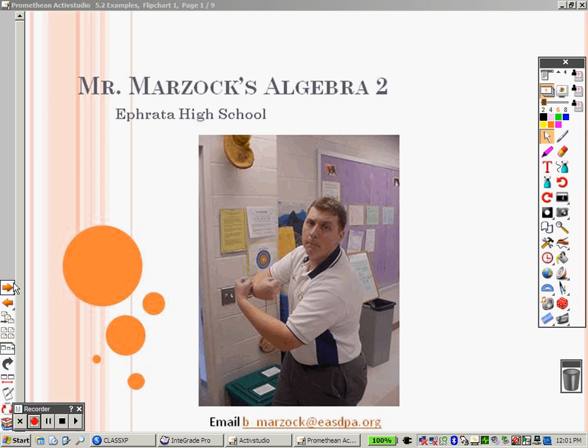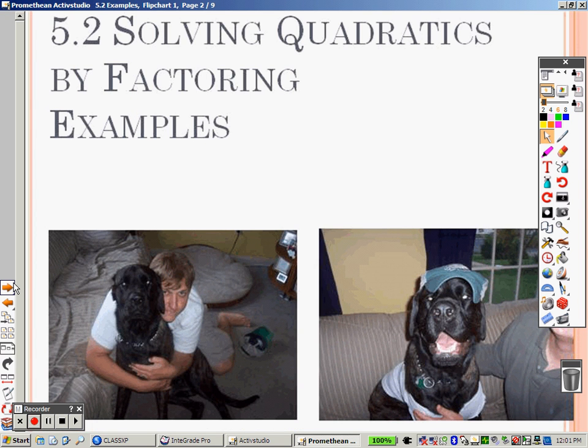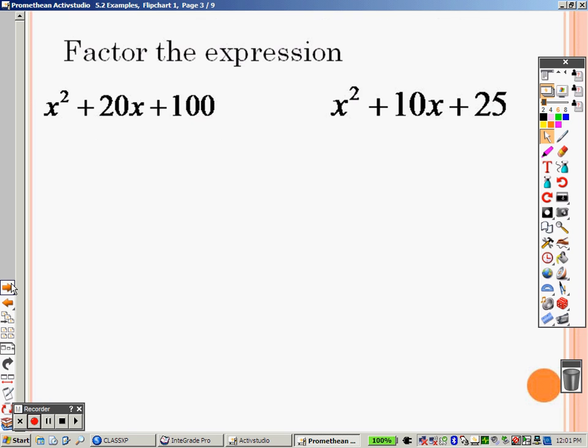Alright, 5.2. 5.2 is factoring, is what we're talking about here. So this is basically just some warm-ups here with some factoring. So let's figure out what we get here.